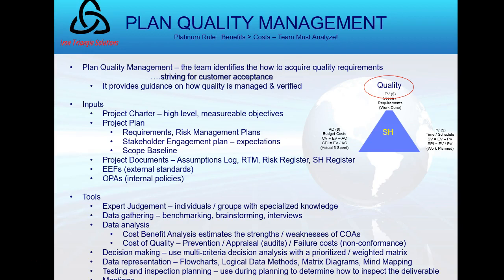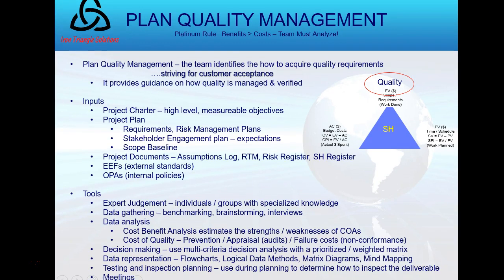Plan Quality Management results in a Quality Management Plan — that's the output of this process. Inputs include the project charter, which has high-level measurable objectives to be detailed later in the project plan. We've already gathered requirements, engaged stakeholders, and developed a scope baseline. Quality is meant to ensure we've met the project requirements, hence the scope baseline. Project documents include the RTM — the Requirements Traceability Matrix developed in scope management.